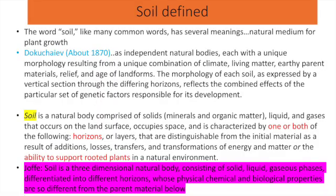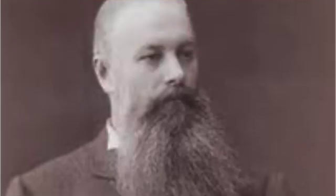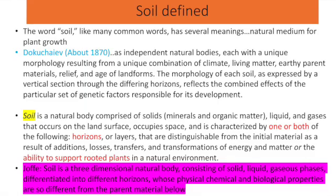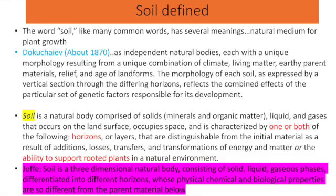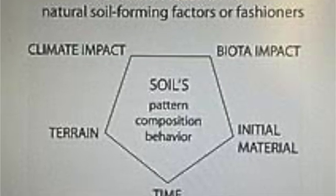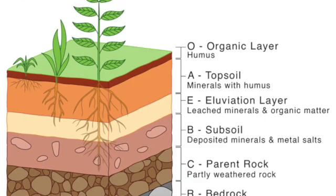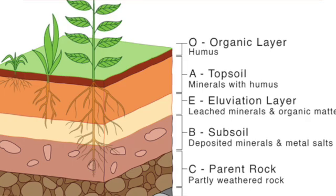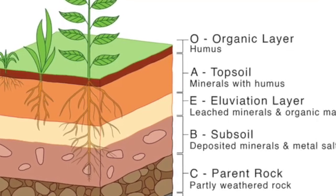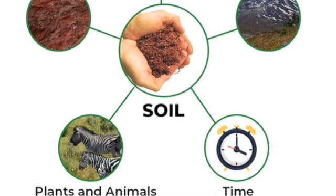When we try to define soil, the first thing that comes to mind is soil as the natural medium for plant growth. Dokuchaev, who is known as the father of soil science, defined soil as a natural body, each with a unique morphology resulting from a unique combination of climate, living matter, parent materials, relief and age of landform. The morphology of each soil, as expressed by vertical sections through different horizons, reflects the combined effect of a particular set of genetic factors responsible for its development.